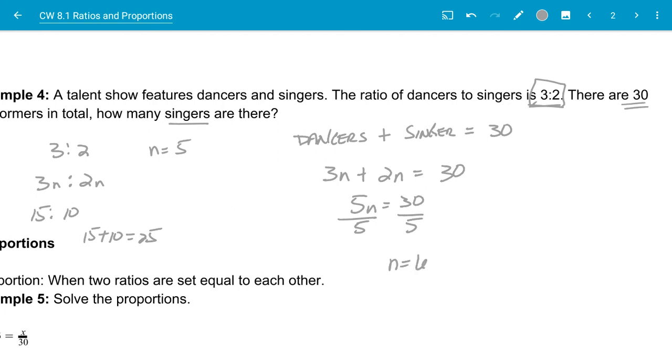Now I know what n equals. Since it's 3n to 2n, that's 3 times 6 and 2 times 6, which is 18 to 12. This was my original ratio that reduced down to 3 to 2. So 18 plus 12 equals 30, which means there are 12 singers in the group.